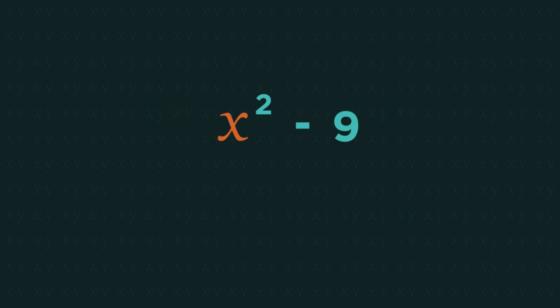Both the x squared and the nine are square numbers. These are really simple to factorize.